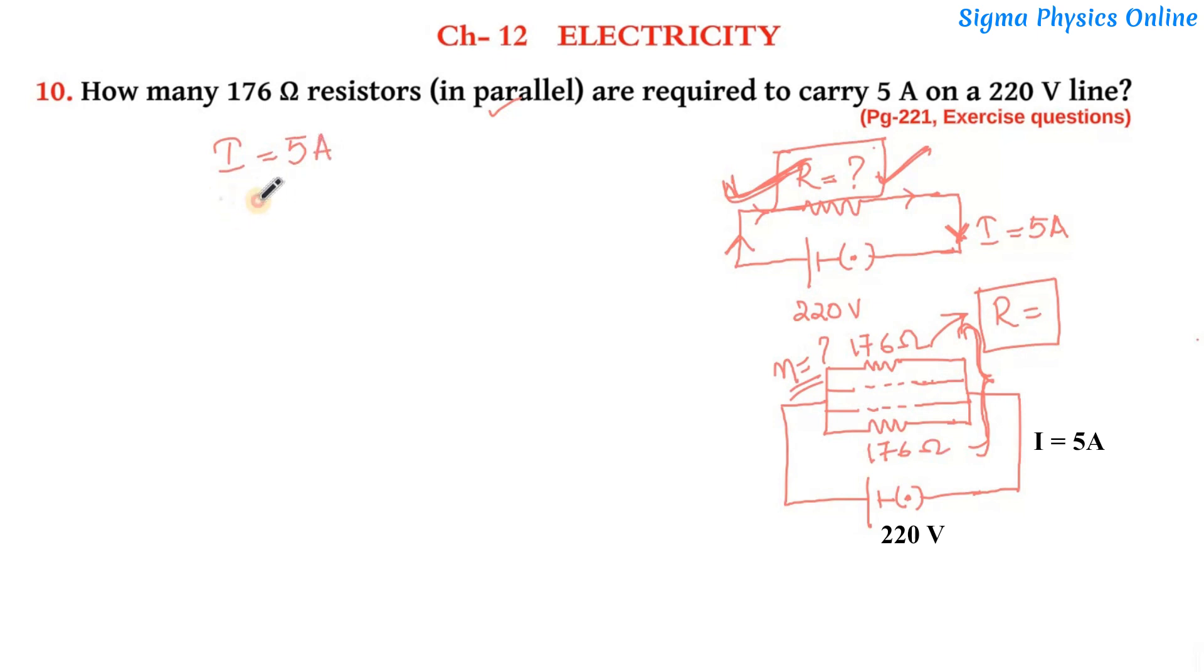Let's write down what all is given. The current value is given as 5 amperes and the potential difference given here is 220 volts. So let's find out: when a current of 5 amperes flows in this circuit which is connected across a potential difference of 220 volts, what is the value of the resistance connected in the circuit?